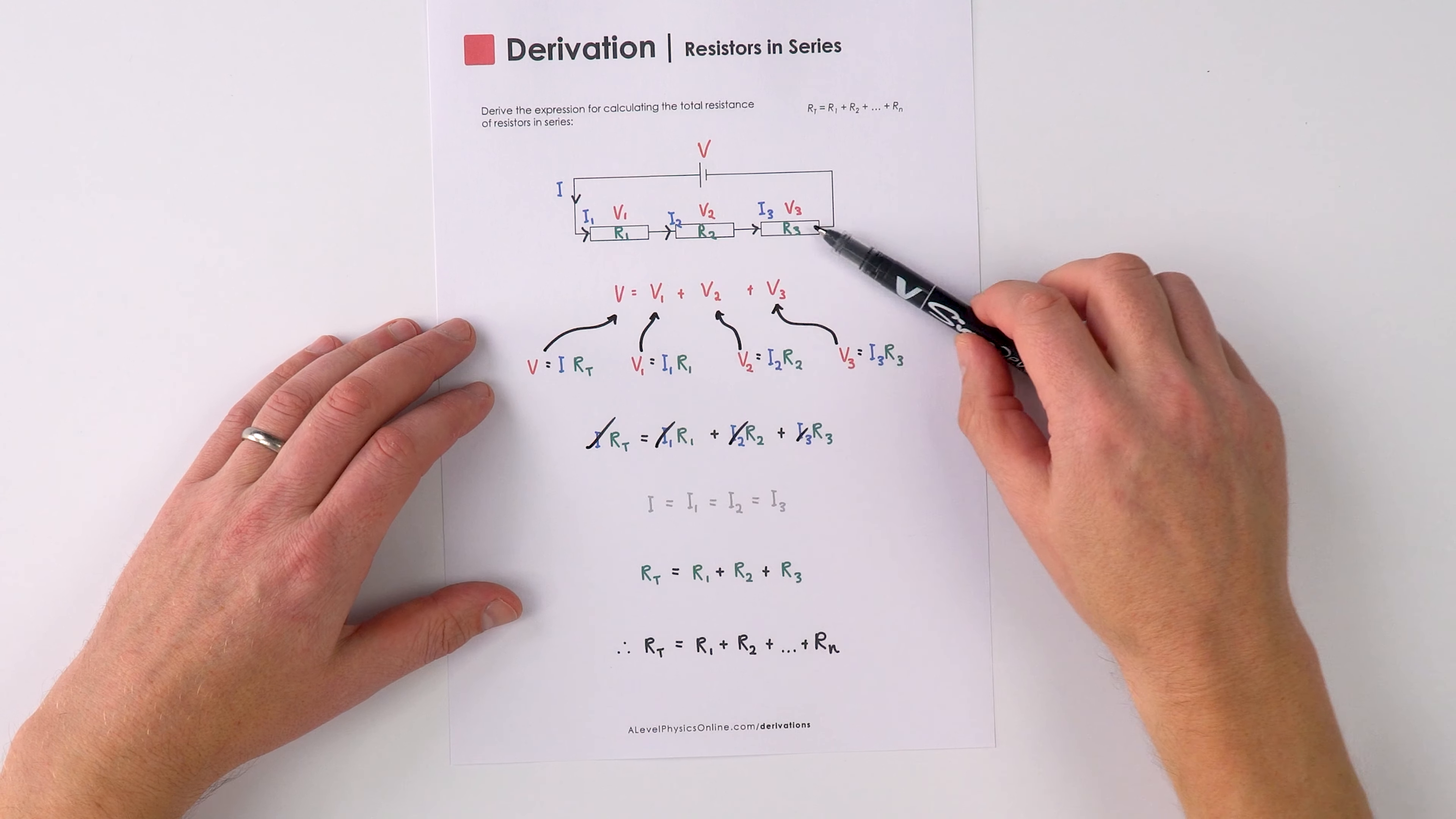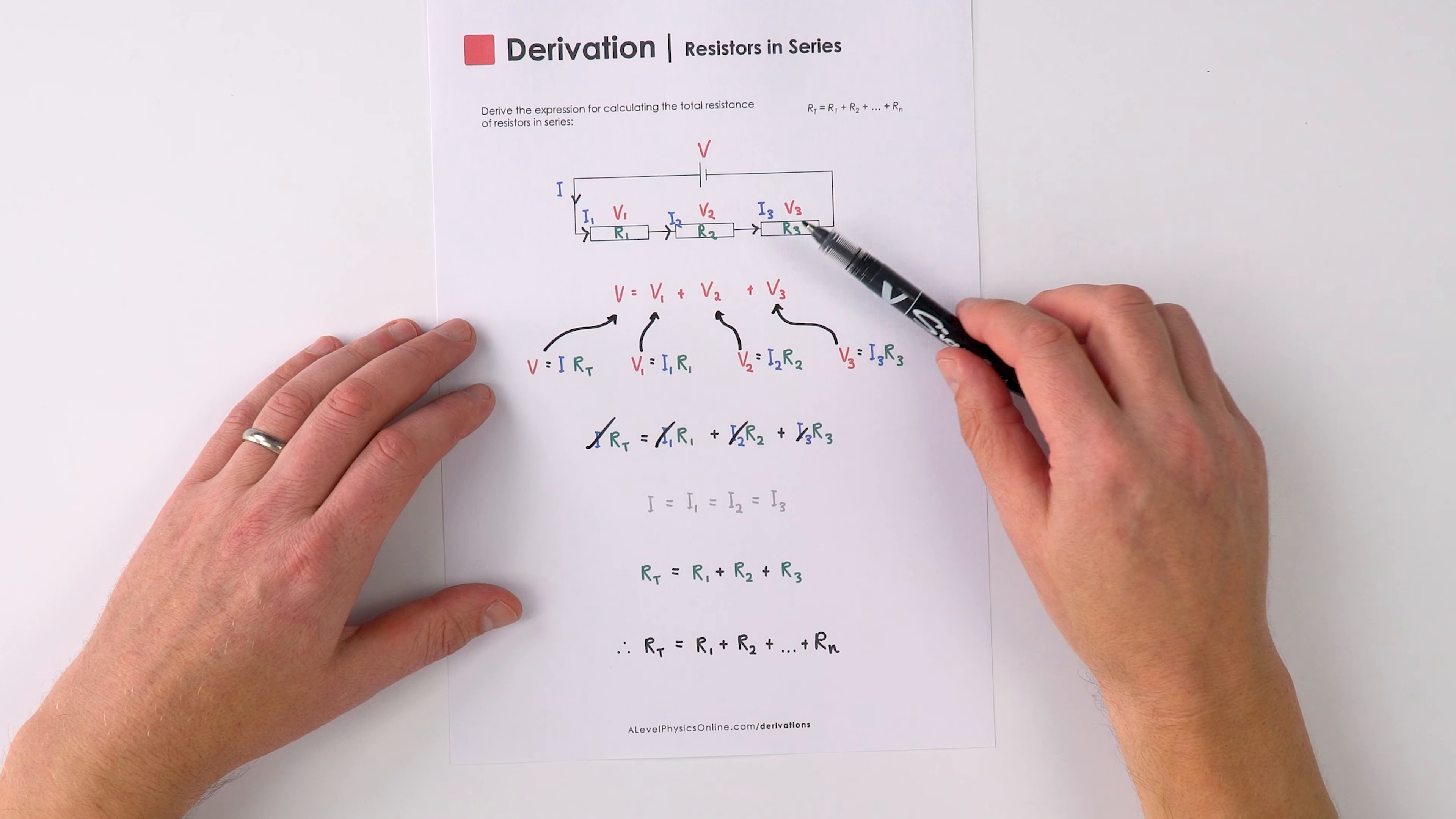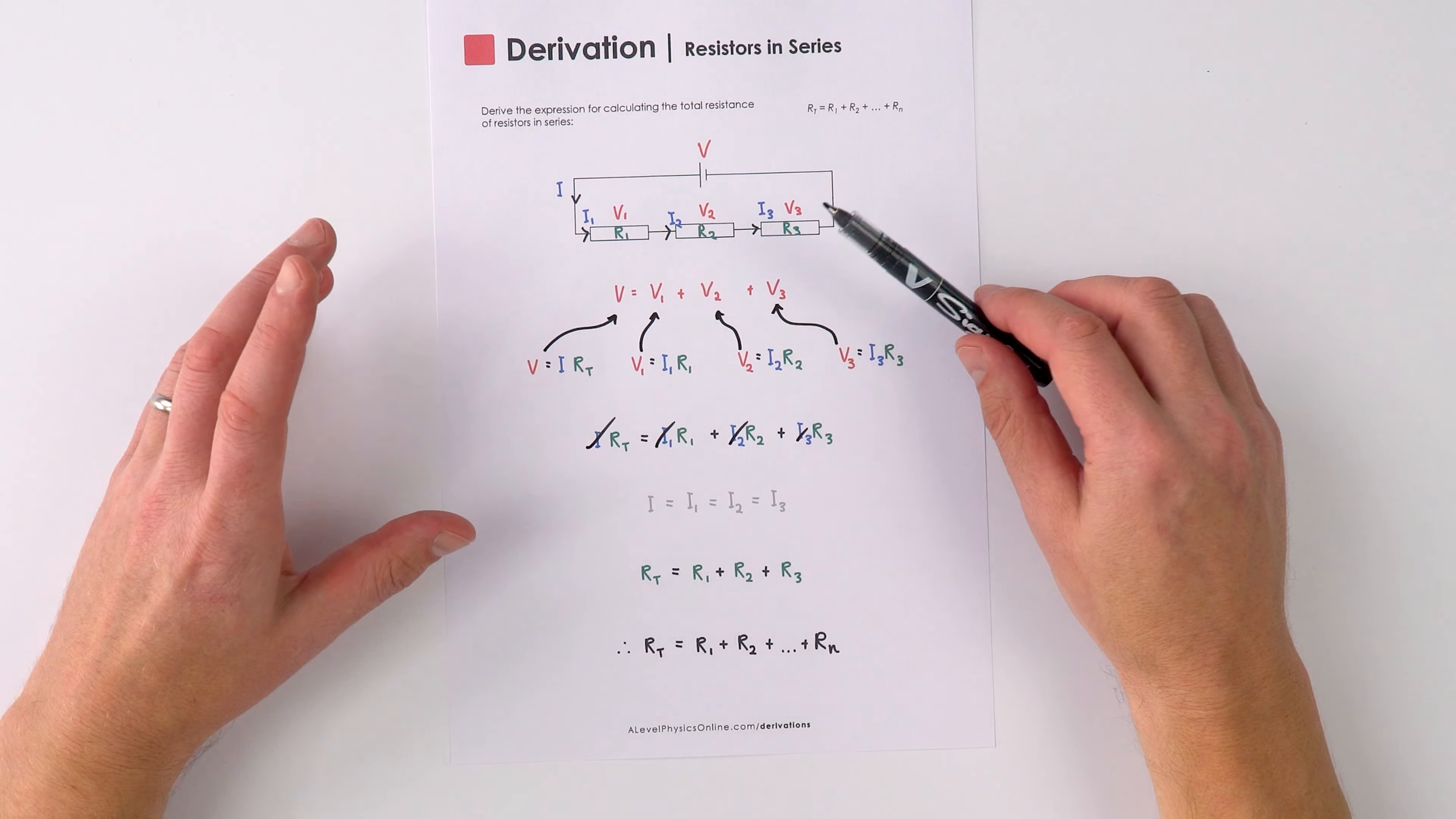Or indeed, however many resistors we have in series, we just add up their individual resistances to find the total resistance.